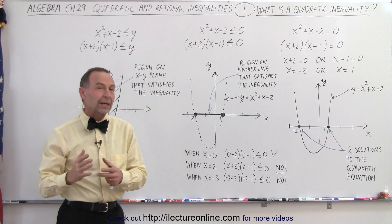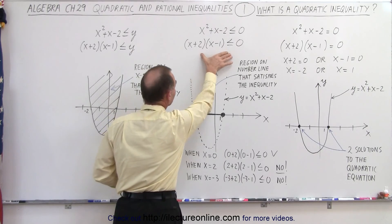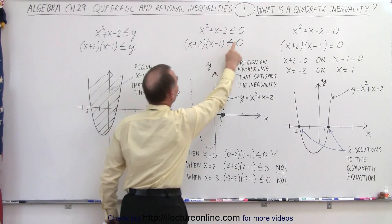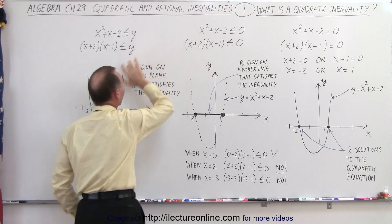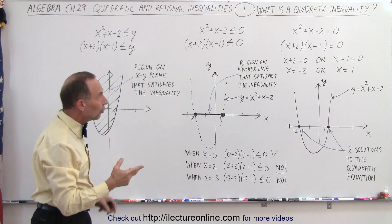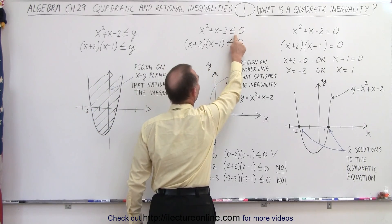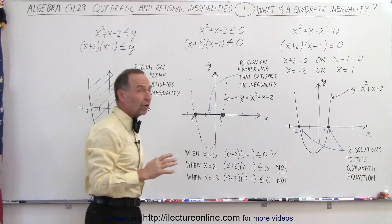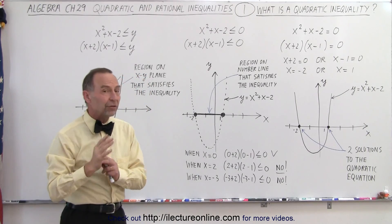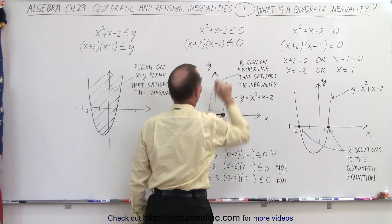Now notice when we deal with quadratic inequalities, we can look at them with a 0 on the right side, or we can look at them with a y. Here we have a 0, there we have a y, and we'll see in just a moment what the difference is between the two. Notice instead of having an equal sign, we have a less than or equal sign. So what does that mean? Well, we're looking for all the values of x that make the left side less than or equal to 0.